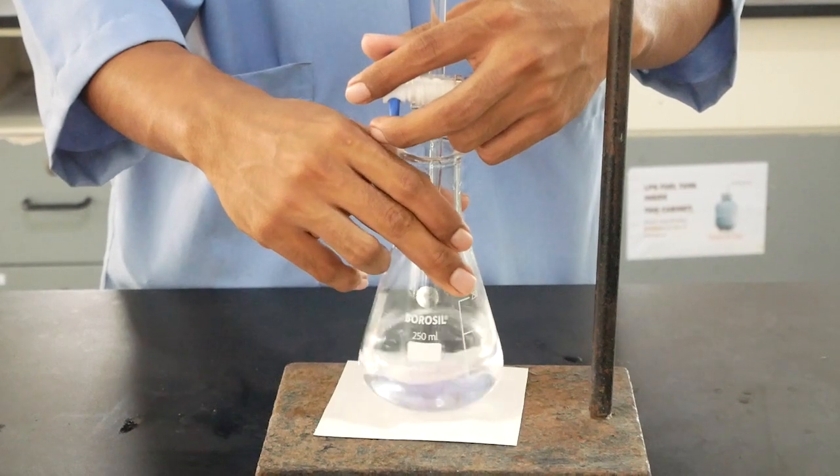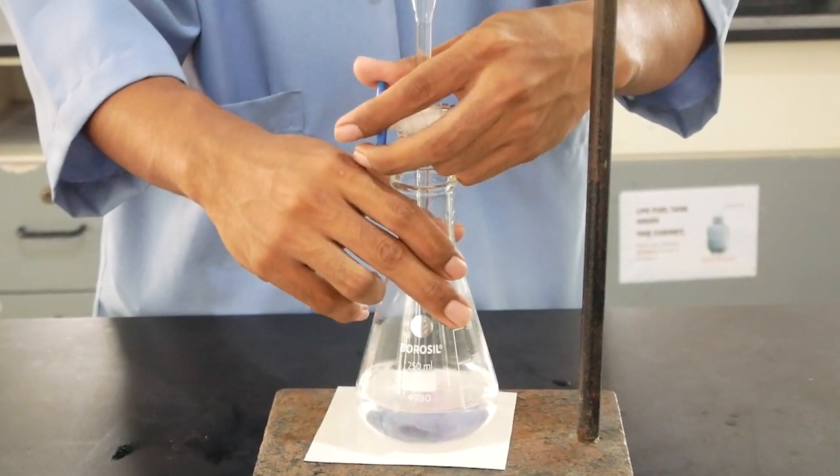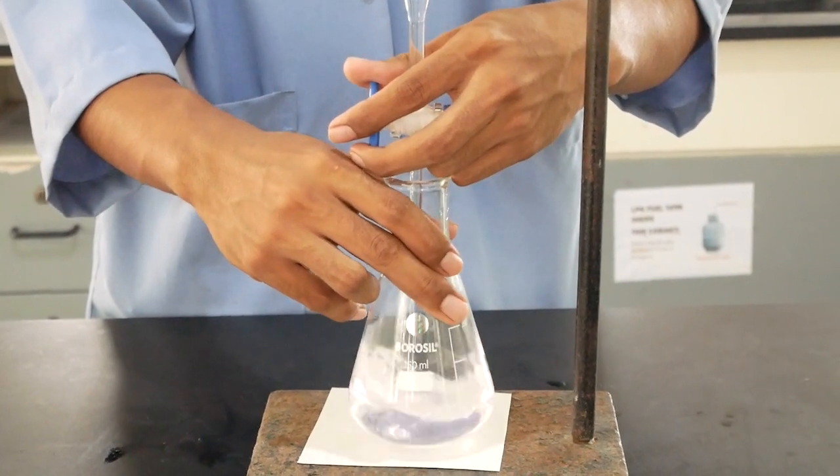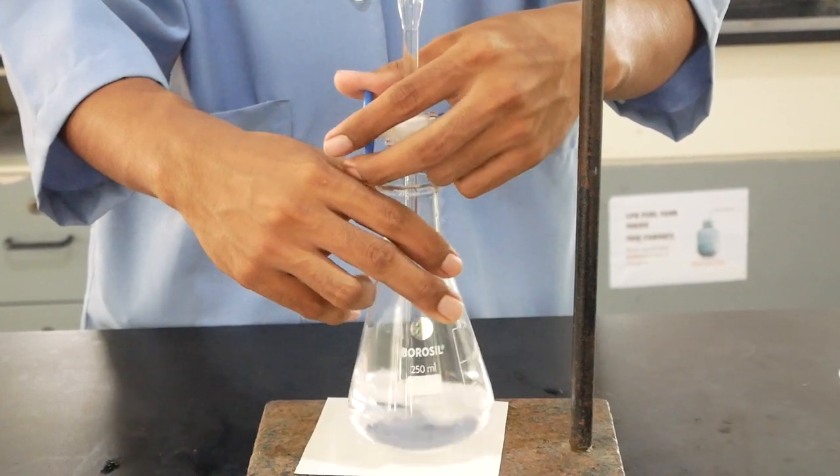The swirling must continue as the titrant is mixed. Take note when the pink coloration in the solution starts to appear with each drop of the titrant. That would indicate that the titration is about to reach endpoint.